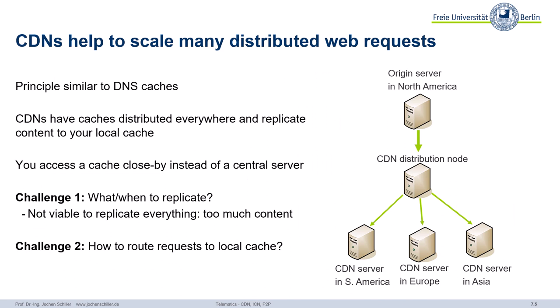So what is the idea? It's similar to DNS caching — you basically cache the content. Maybe you have an origin server somewhere in the US, and then you distribute content — for example, an update — to a server in South America, one in Europe, and one in Asia, or to 100 in Europe, or whatever. The CDNs have caches distributed all over the world and basically replicate content closer to the customer. So as a customer, you access the cache nearby instead of the central server. This really lowers the delay a lot.